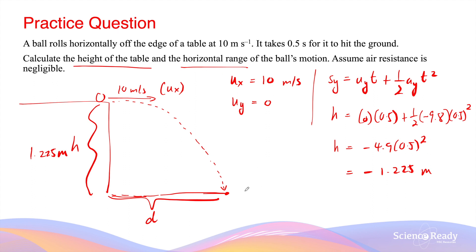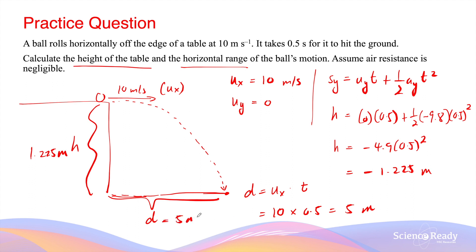The horizontal range can be calculated using the formula d = ux × t, which is the initial horizontal velocity times the time of flight. The horizontal velocity is 10 meters per second, multiplied by 0.5 seconds, giving 5 meters. Keep in mind that when calculating the horizontal range, we do not need to consider any acceleration or deceleration if we assume air resistance is negligible.